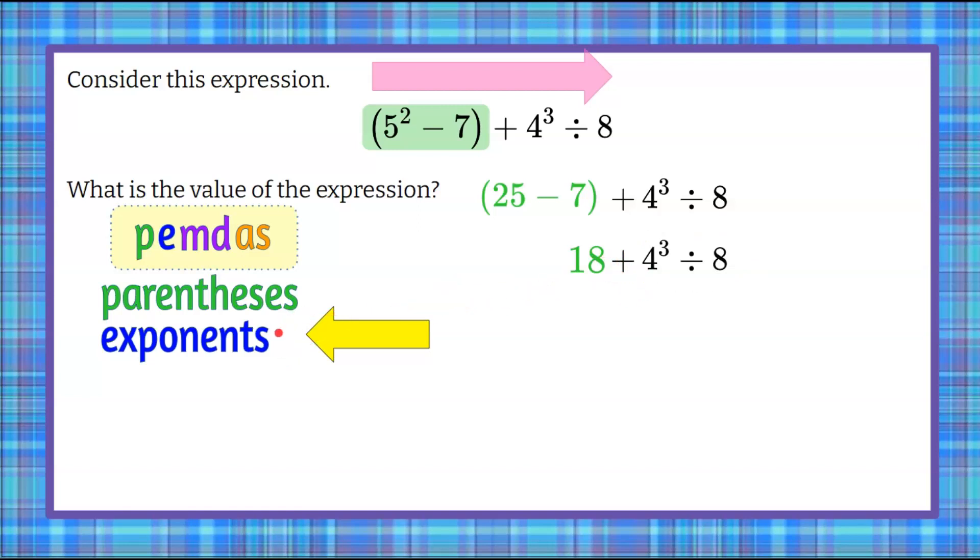So the next thing we want to do here is we're reading it left to right, but we still have exponents. So we're going to simplify 4 cubed. 4 cubed can also be written as 4 times 4 times 4, and don't forget we still got to bring down that divide by 8. So 4 times 4 is 16, 16 times 4 is 64. So we're going to add 64 to our 18, and don't forget we're going to divide by 8.